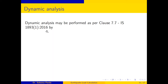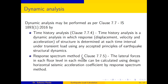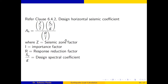Dynamic analysis is performed as per clauses 7.6 and 7.7 of IS 1893 (2016) by two methods. The first is Time History Analysis (clause 7.7.4), where the response — displacement, velocity, and acceleration — is calculated at each time interval. Earthquake is a transient load, meaning its peaks change with time, so the response is computed at every interval. The second is the Response Spectrum Method, which calculates the response using the spectral approach described previously.